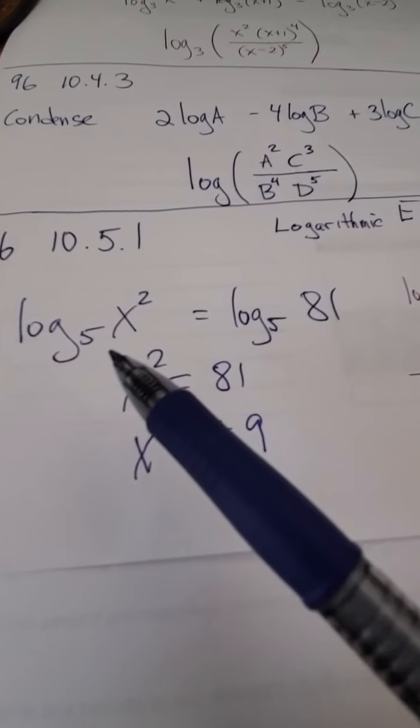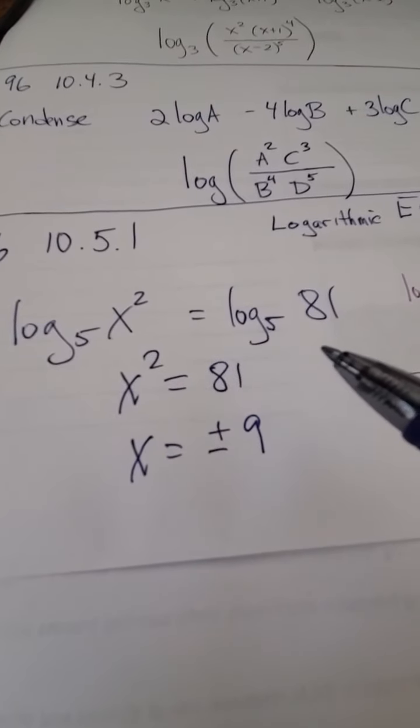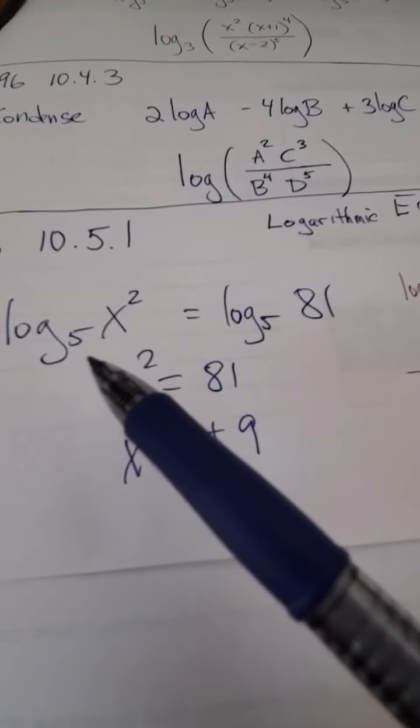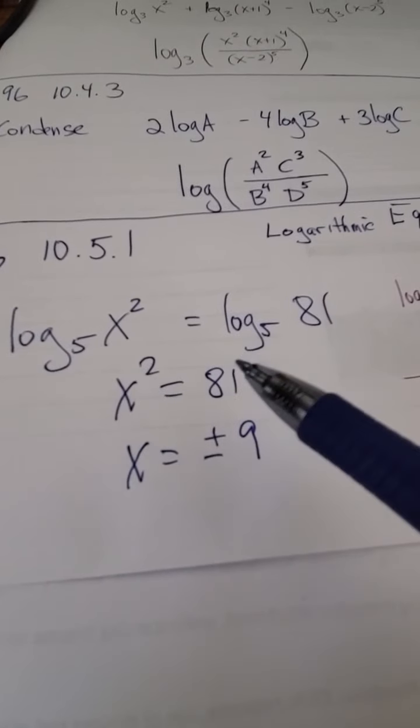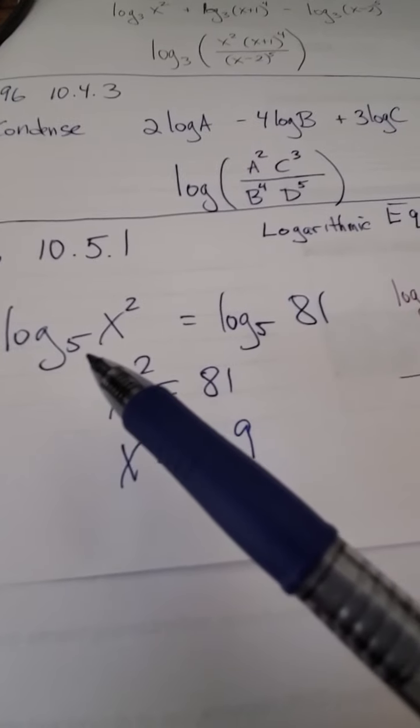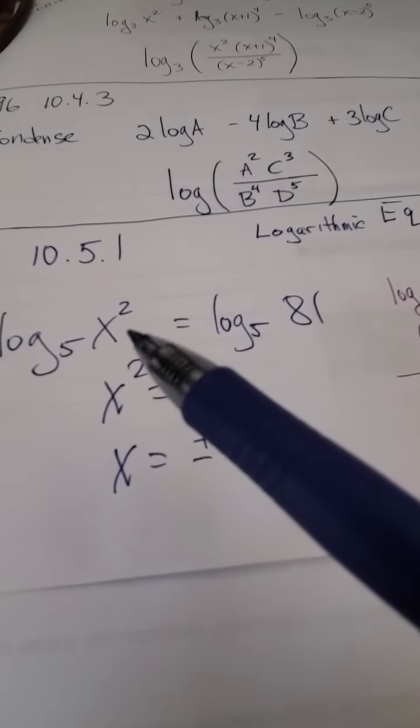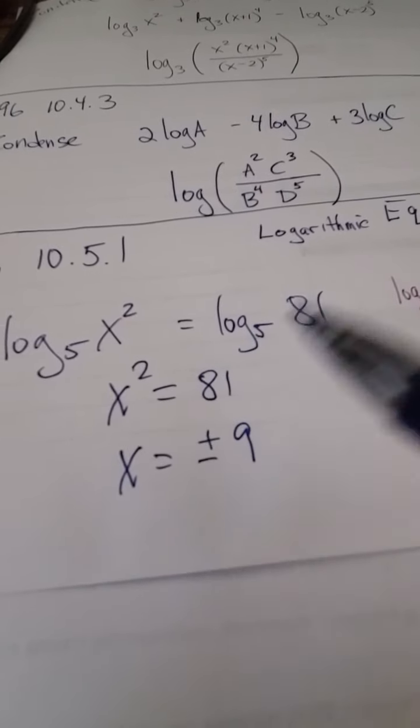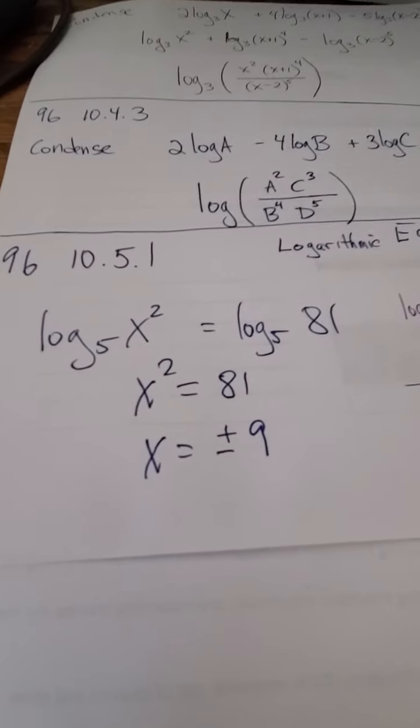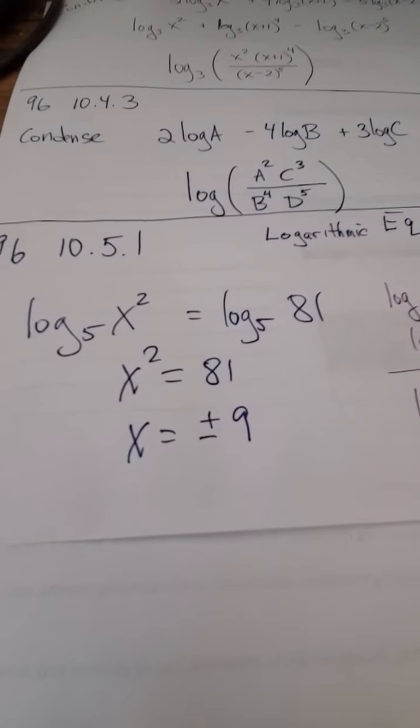Before we go on to our next example, I just want to point out that the 5 wasn't really that relevant. The only thing that mattered is that 5 and 5, that the base is matched. It didn't matter for this problem, it really didn't matter if it was base 5, base 17, base 92, it didn't really matter because all I got was x squared equals 81.